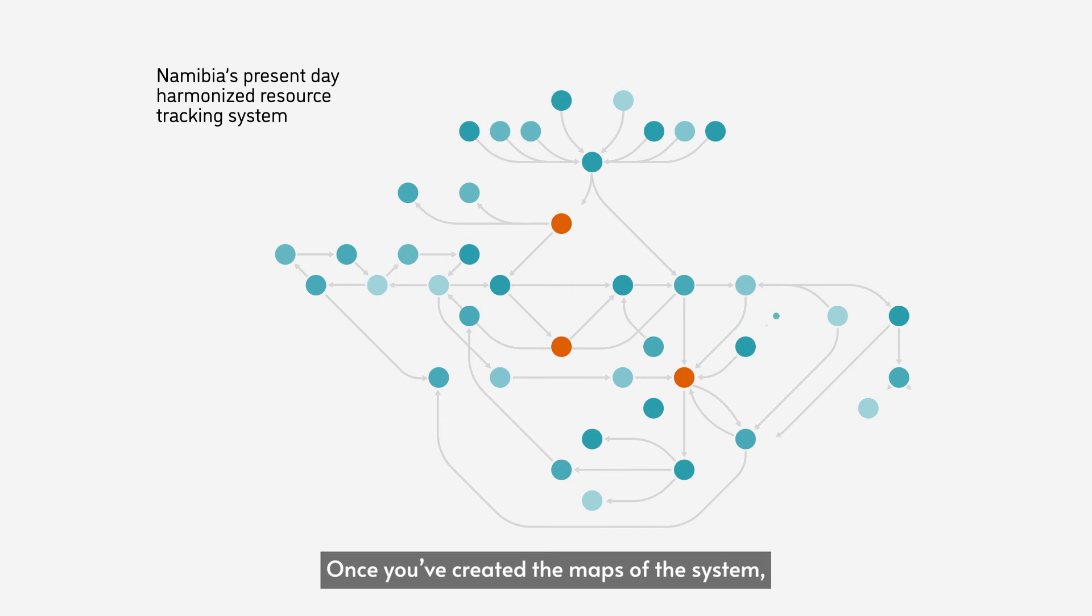Once you've created the maps of the system, it's important to go through a process of validation with the stakeholders to ensure your interpretation of the system is accurate. The output after that validation might look something like this.